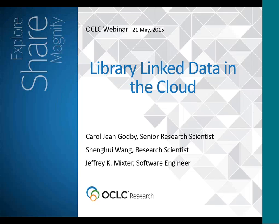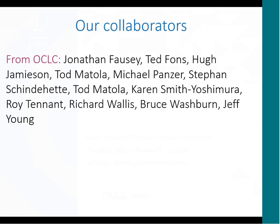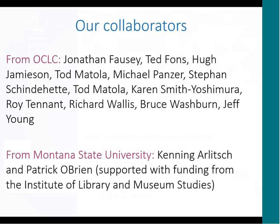Every now and then you'll see slides with a green background — those are headings of the major sections or chapters in the book. This book has three authors, but we have a lot of collaborators at OCLC. We also work with colleagues from Montana State University, Kenning Arlitch and Patrick O'Brien, on their grant-funded work about improving the visibility of libraries on the web. Jeff Mixter is formally a member of their team, but this book is not a formal deliverable from their project.